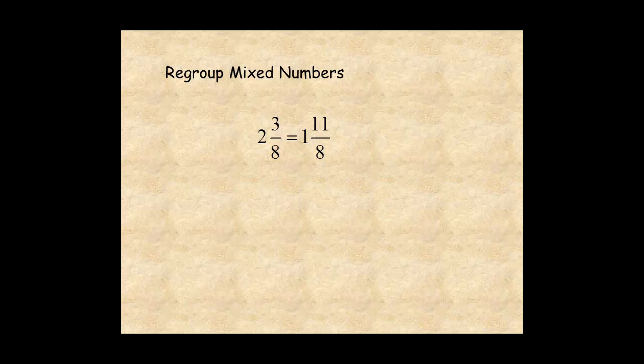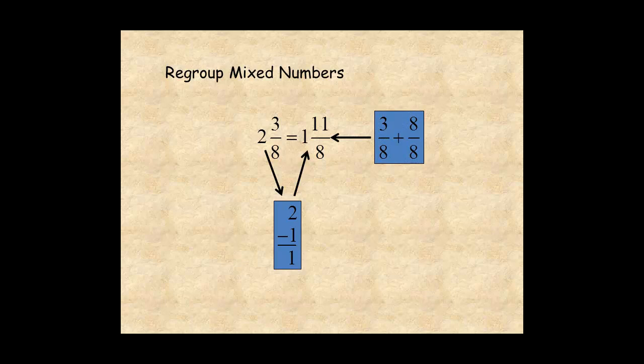For this example, 2 minus 1 equals 1, and 3 eighths plus 8 eighths equals 11 eighths.